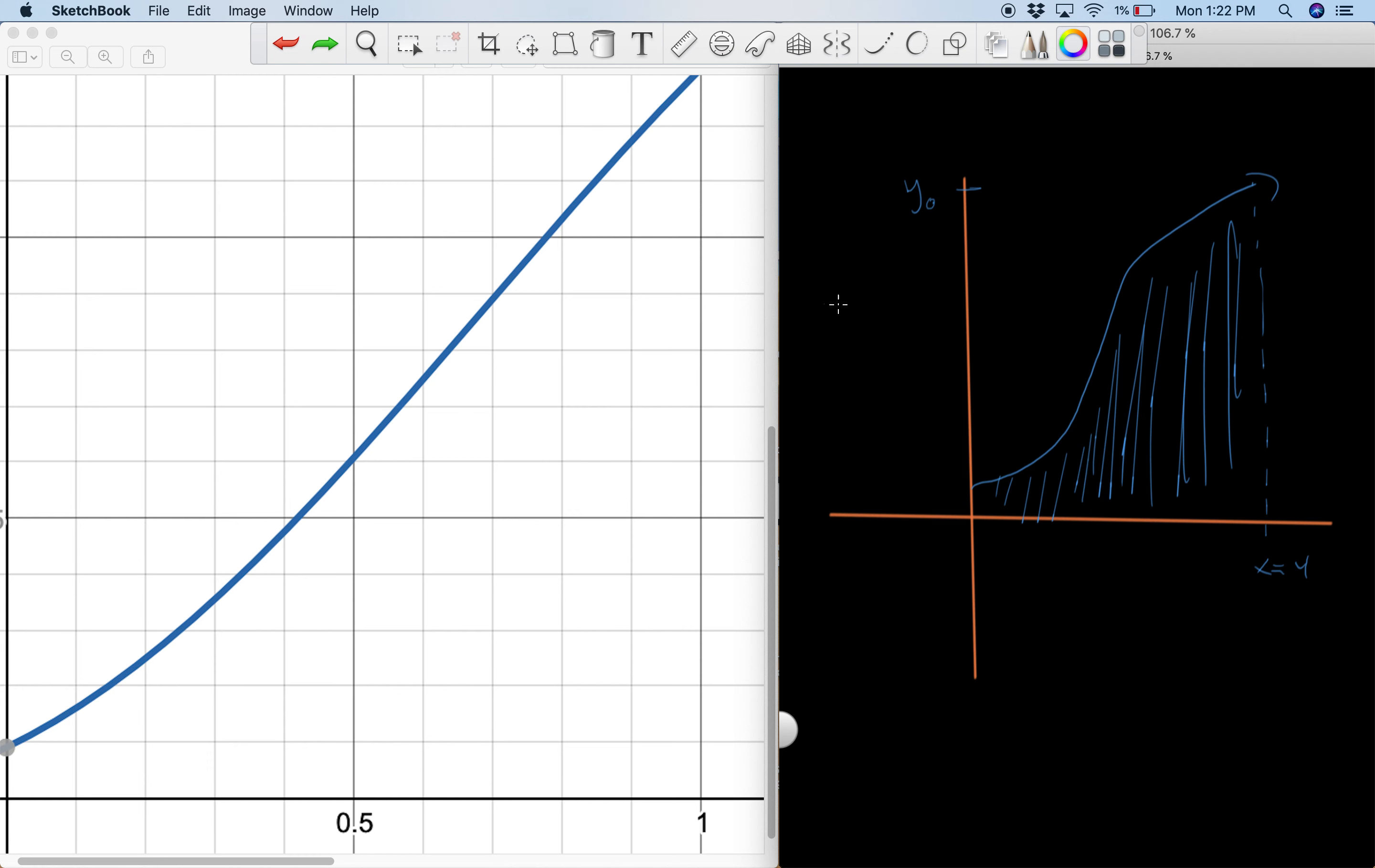And the physical meaning in this case would be the position. Again, remember we define the x-axis to be time and the y-axis to be speed. So if we know the time versus speed and we take the area under it, then that gives us the position, or the distance or displacement.